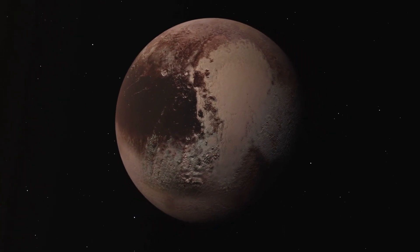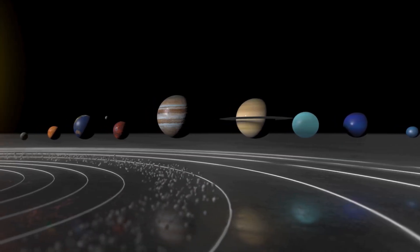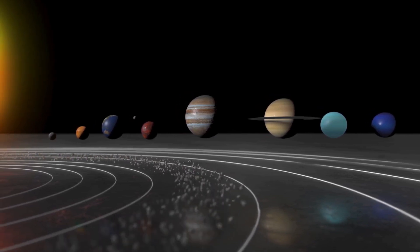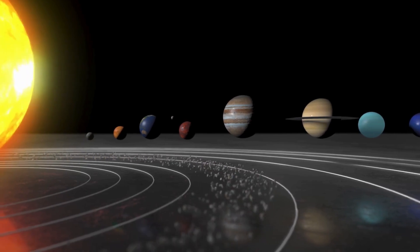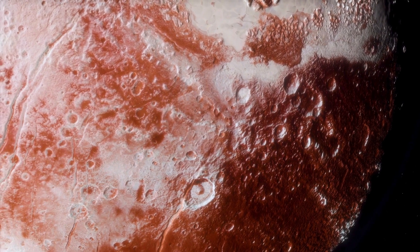Pluto's journey around the Sun is unlike any other planet in our solar system. It takes a staggering 248 years to complete a single orbit, meaning that since its discovery in 1930, it hasn't even finished one full revolution yet.